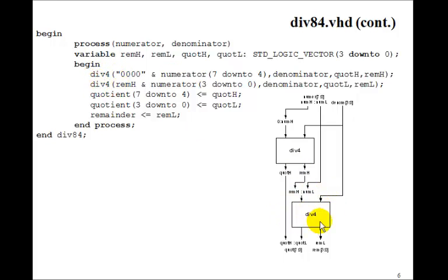The second div4 is going to get this one. Well, it's going to use remainder high from here. So this remainder high gets concatenated with the numerator low, which is numerator 3 down to 0. The same denominator comes in. And the output will be quotient low and remainder low. Then the output 8-bit quotient, 7 down to 0, will be made up of quotient 7 down to 4 is quotient high. Quotient 3 down to 0 is quotient low. And then the output remainder is just remainder low.